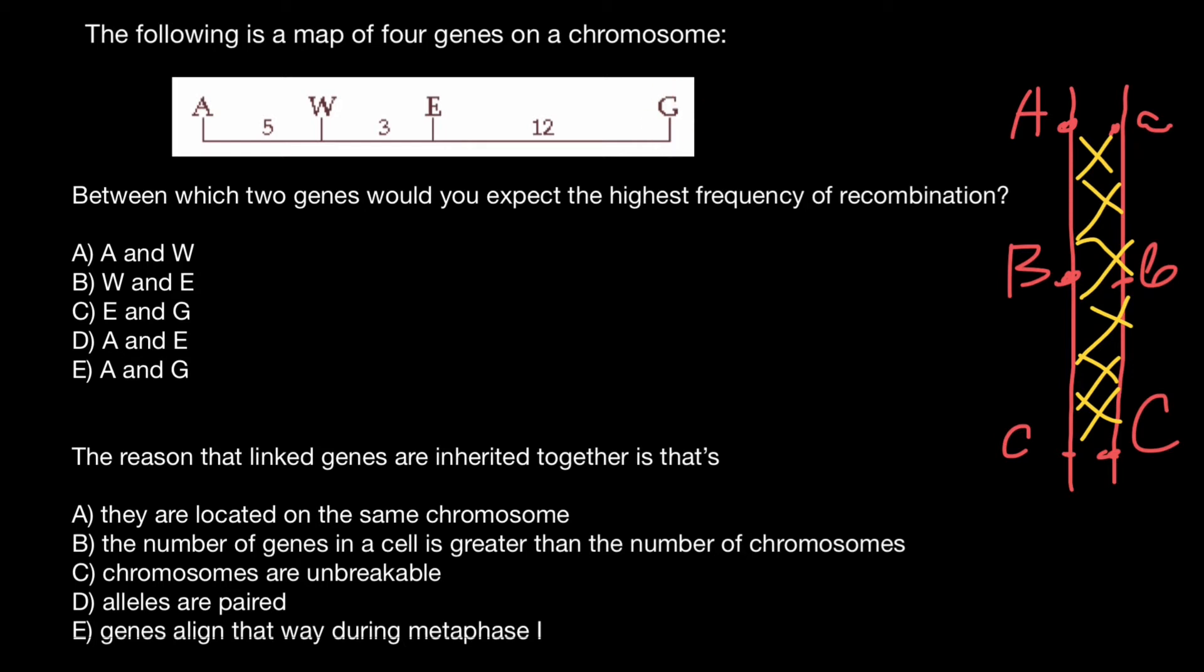The correct answer is answer E. Some of you may get into trouble thinking that the greatest distance is between E and G, which is 12, which is obviously more than 3 and 5. But don't forget that A and G are on the same chromosome, and the greatest distance would be between these two genes. And the second question,